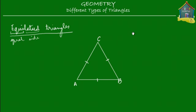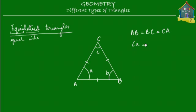AB is of the same length as BC, and that is the same length as CA. Now, the interesting thing about equilateral triangles is that all three angles — angle C, angle B, and angle A — are all equal. Angle A is equal to angle B, and that's equal to angle C, and I can show that to you. Let's fill some color into these.